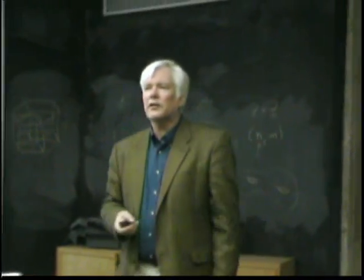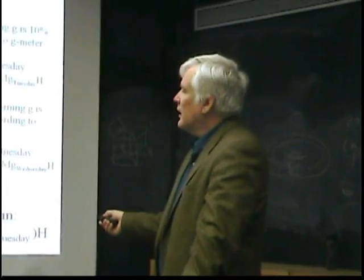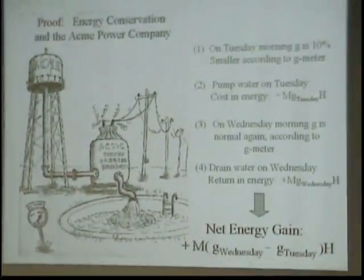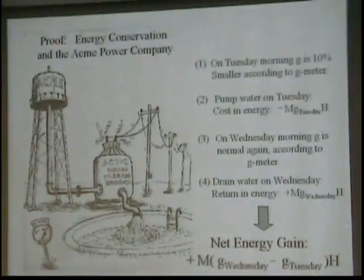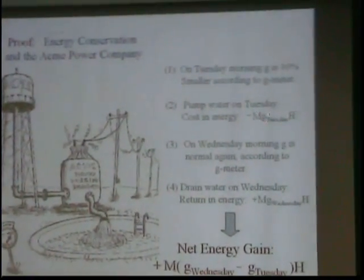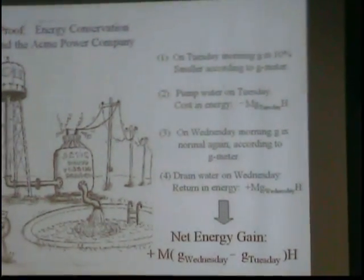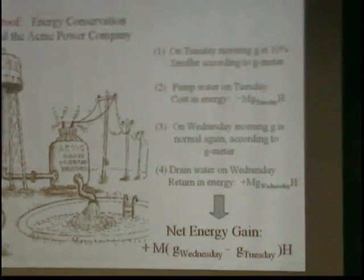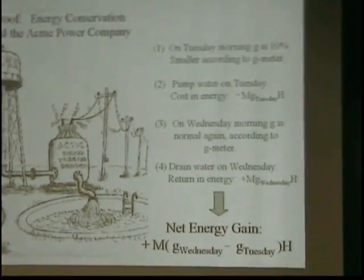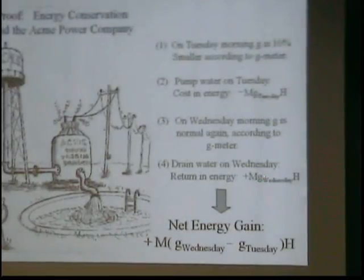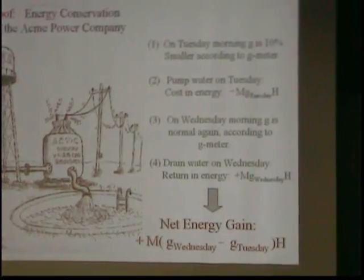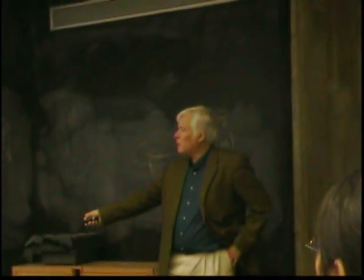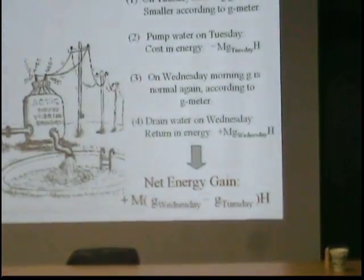So the Acme Energy Company is formed by a bunch of investors — they float stock, go public, and start building a power company. They'll have a water turbine generator, and on Tuesdays at 10 a.m. they'll pump water up into a water tower. That costs them energy equal to minus the mass of the water times the value of g on Tuesday times the height of the tower. Then on Wednesday, when g has gotten bigger, they drain the water out and get back energy m times g-Wednesday times h. Since g is bigger on Wednesdays, they've gotten energy from nowhere.